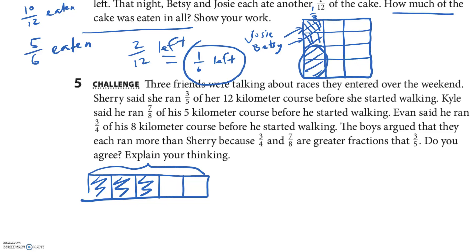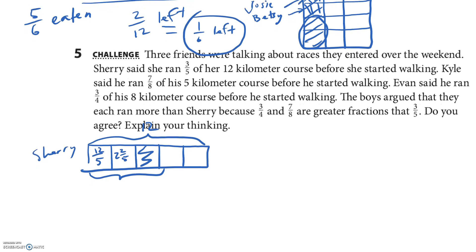So the first one is 3/5 of 12. Okay, so 3/5 of 12. The whole thing is 12. They need to know what this is. So each of these is 12/5, also known as 2 and 2/5. All right, who's that one? That one is 3/5 of 12. That one's Sherry.